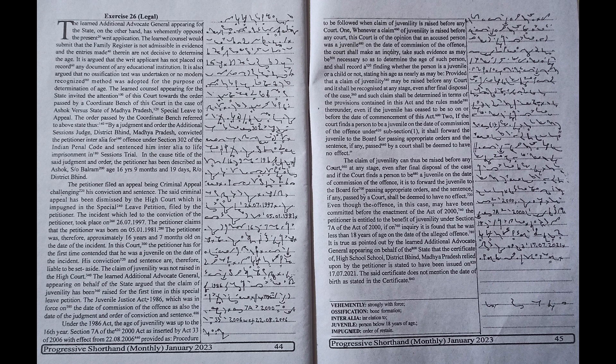The Juvenile Justice Act 1986, which was in force on the date of commission of the offense as also the date of the judgment and order of conviction and sentence. Under the 1986 act, the age of juvenility was up to the 16th year. Section 7A of the 2000 act as inserted by Act 33 of 2006 with effect from 22 August 2006 provided a procedure to be followed when claim of juvenility is raised before any court.